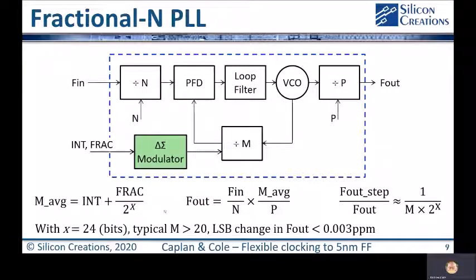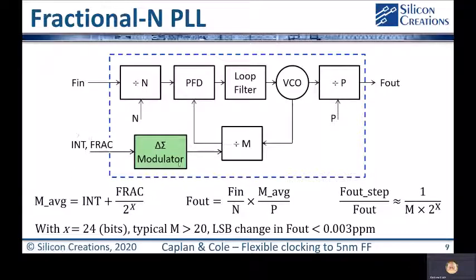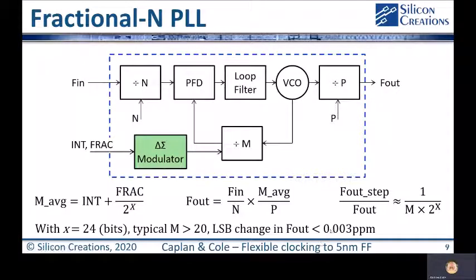Fractional PLLs add a modulator in between the input frequency divider, which is now an integer value plus a fractional value. This modulator continuously changes the feedback divider so that the average value of the feedback divider is the value expressed by INT and FRAC. The output frequency is expressed by the same formula, except that M is the average value of M. The relative output step is now multiplied by 2 to the number of fractional bits. With 24 fractional bits — as many as we use in our fractional PLL — and a typical value of M of 20 or more, the smallest change in output frequency is now extremely small, much smaller than 0.01 ppm.